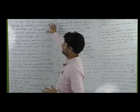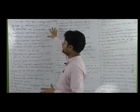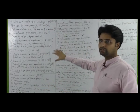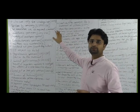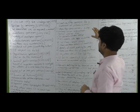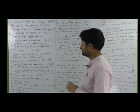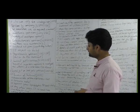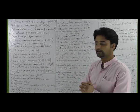इस section में हमने पढ़ा कि कौन company के परिसमापन के लिए आवेदन कर सकता है — 6 petitioners हमने आपको बताये हैं, जो कि Companies Act के Section 272 में बताये गये हैं। अब powers of tribunal — जो कि Companies Act के Section 273 में बताया गया है।